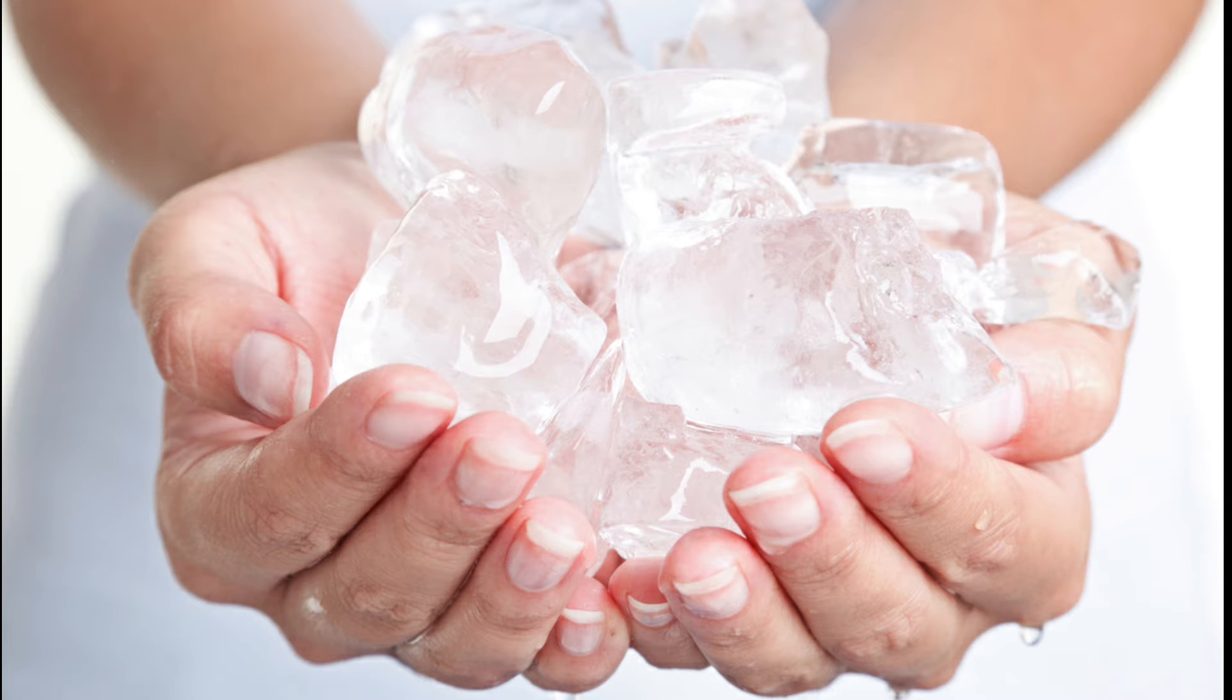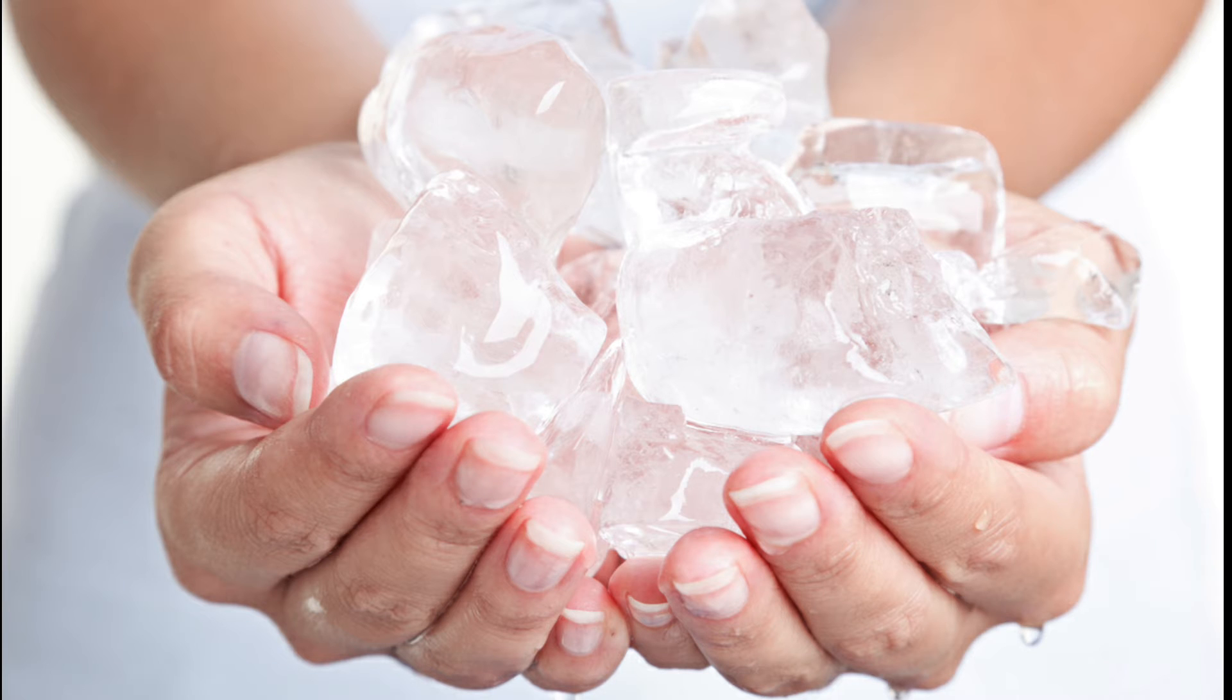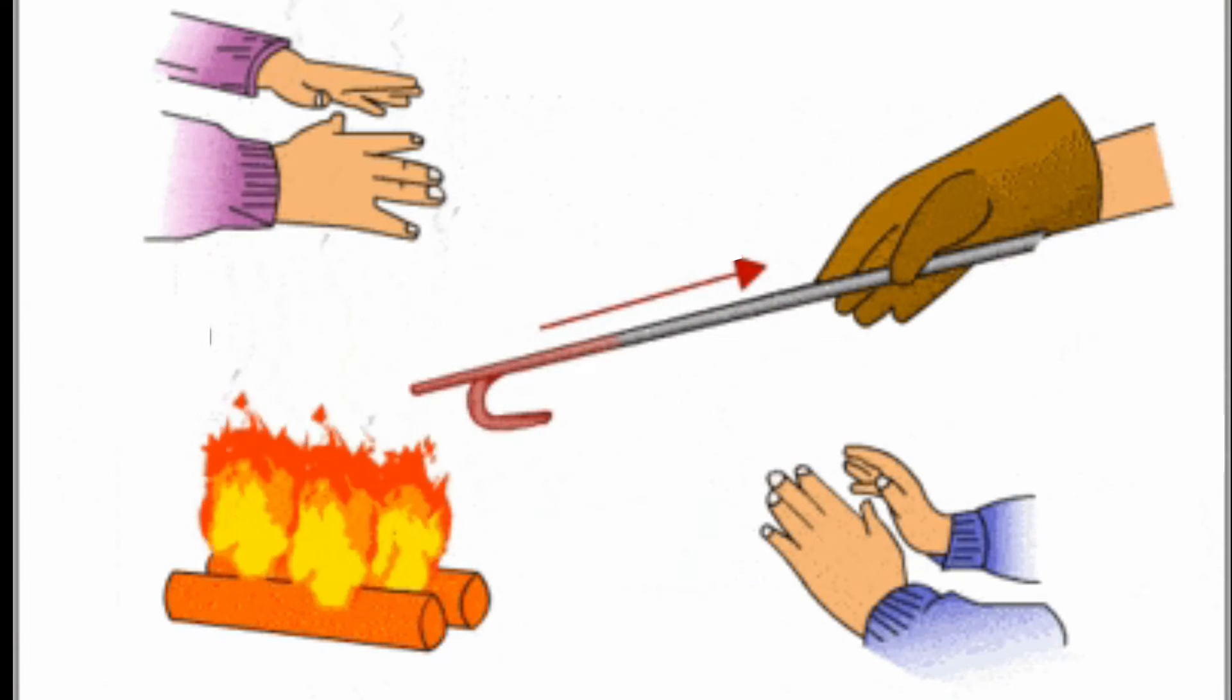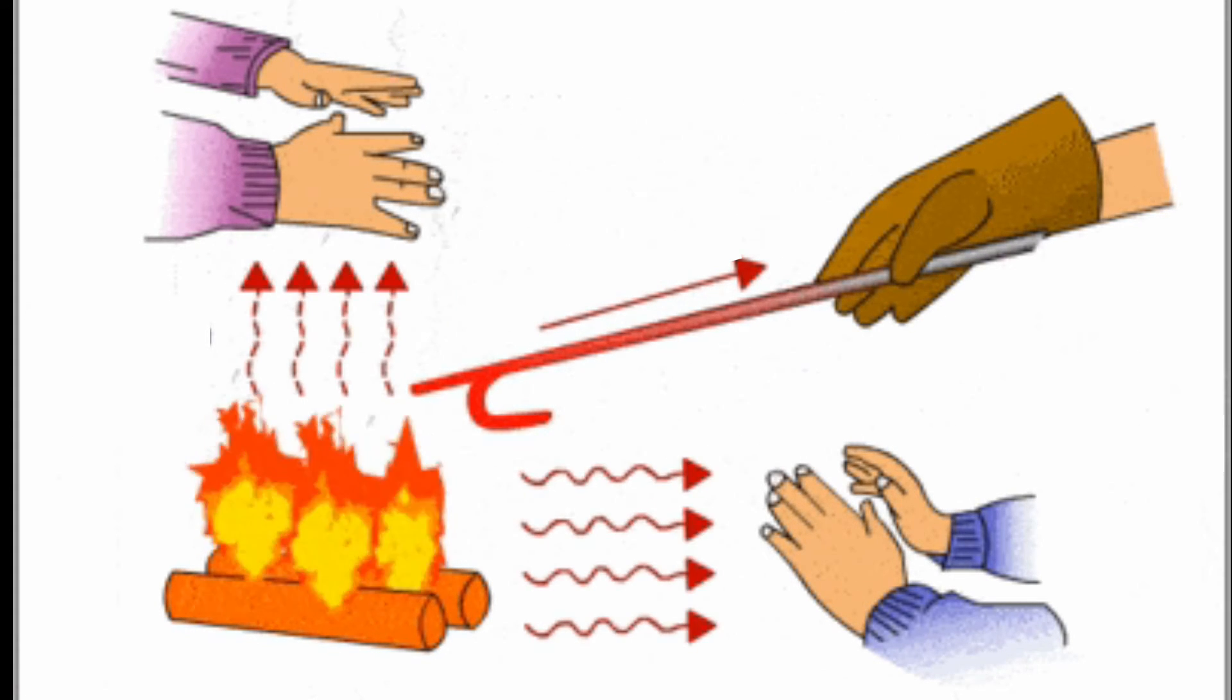Heat and temperature are often confused with one another. Temperature is the measure of hotness or coldness of an object. Heat, once again, is the transfer of energy from the hotter object to the colder object.